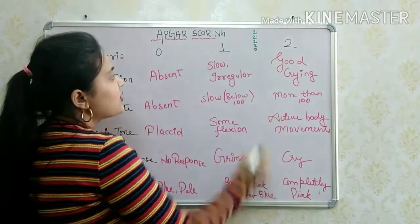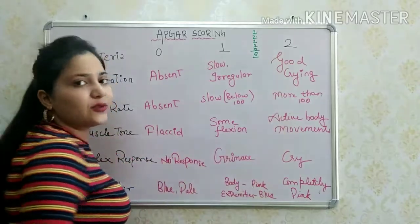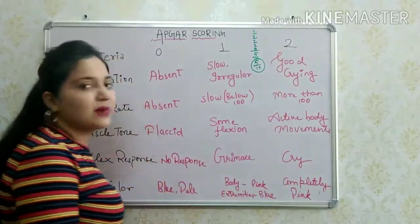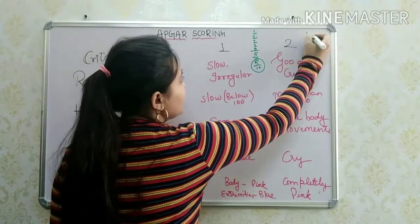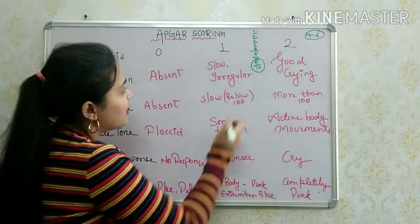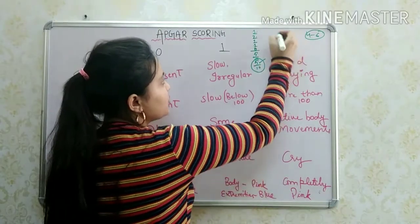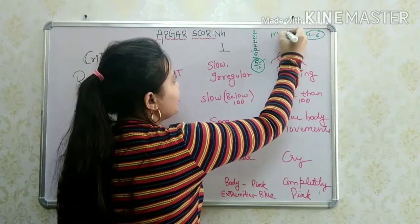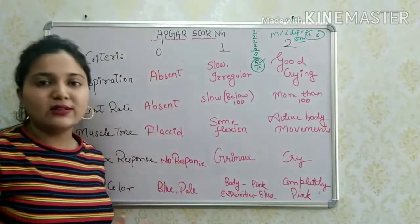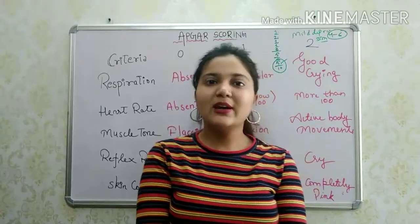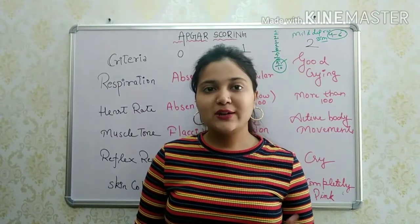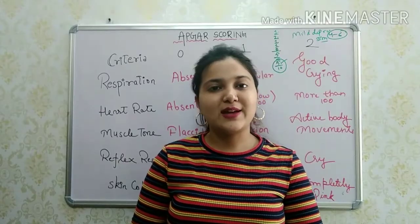Adding up the scores: 1 + 2 + 1 + 1 + 0 = 5 out of 10. Since 5 falls in the range of 4 to 6, this means mild depression. So the next topic is reflexes of a newborn baby. If the video is good, please like and subscribe to my channel. Thanks for watching.